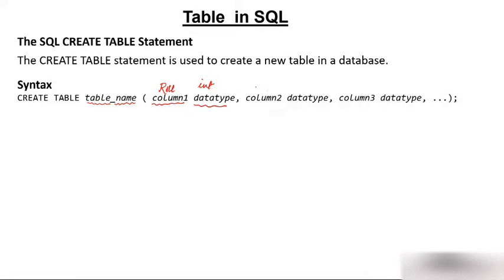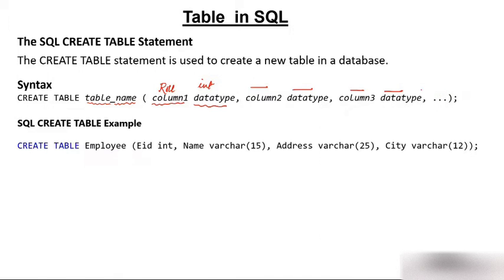Then column two could be anything with its data type, and column three could be anything with its data type as well. Let's see the syntax with an example.